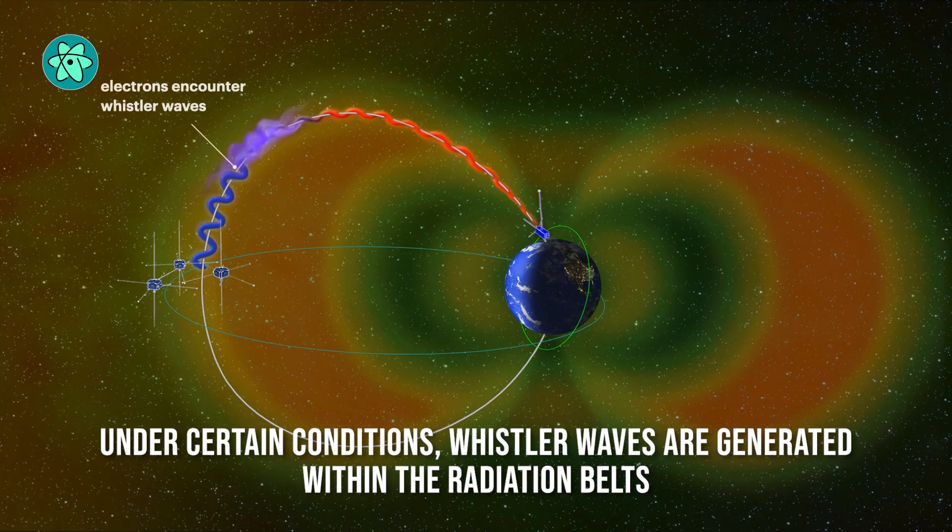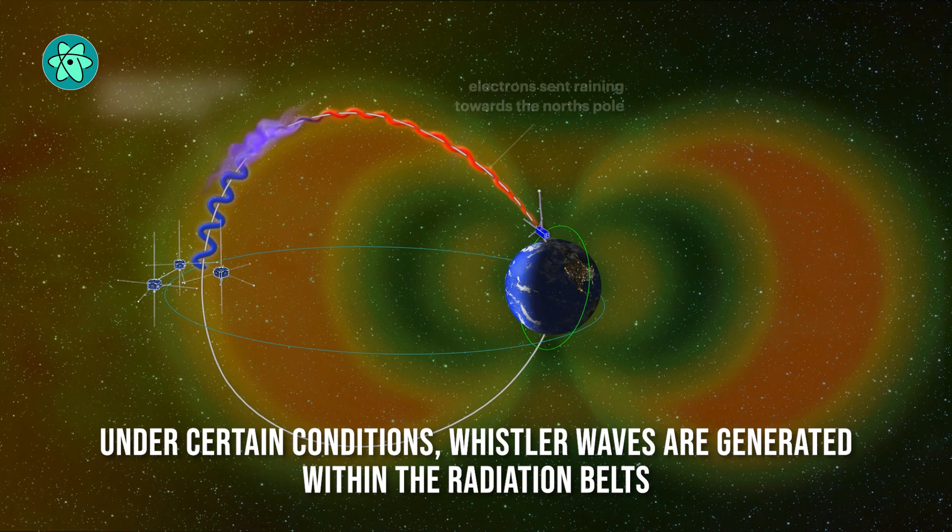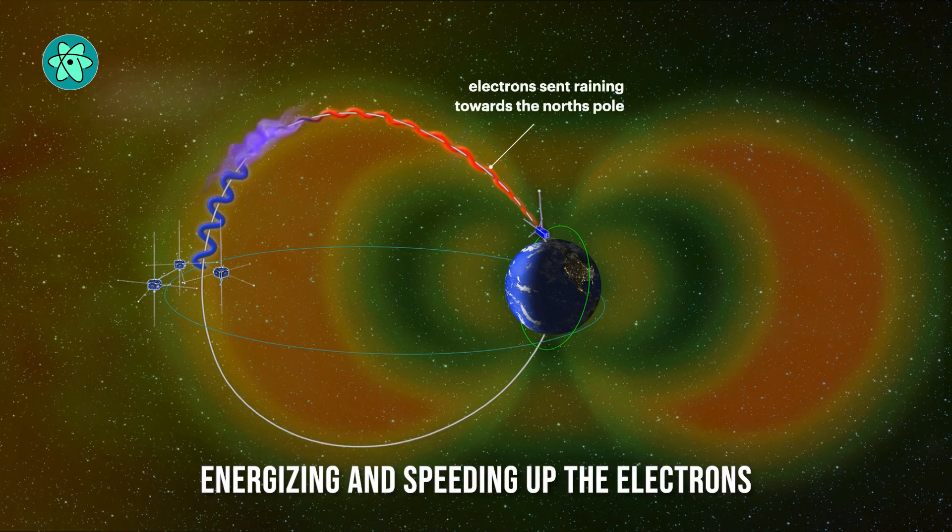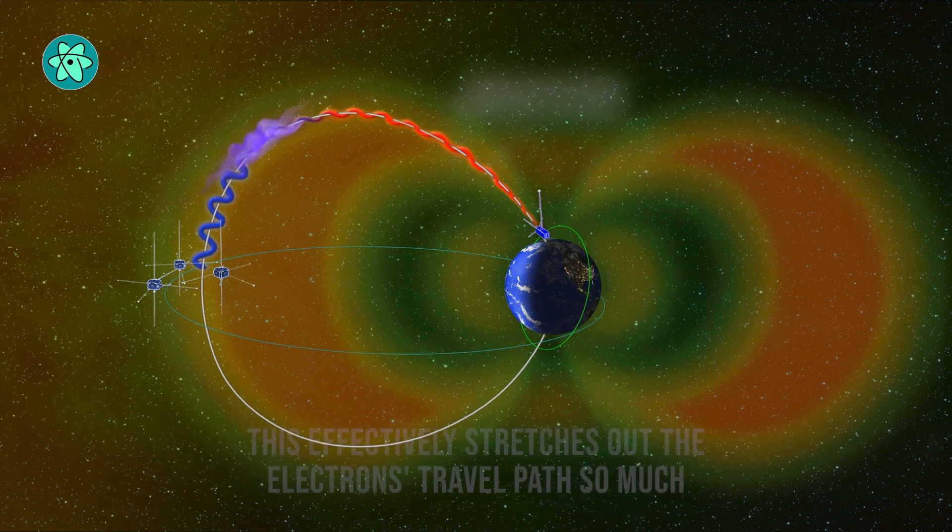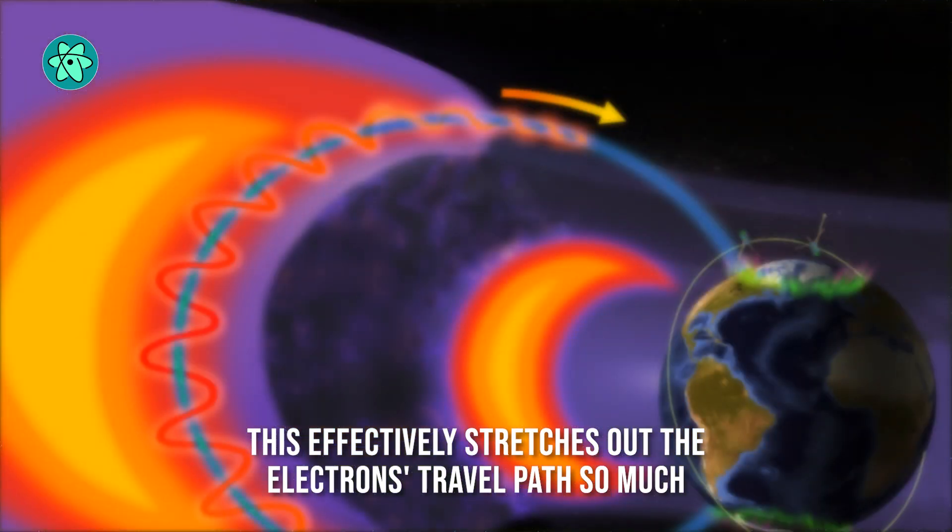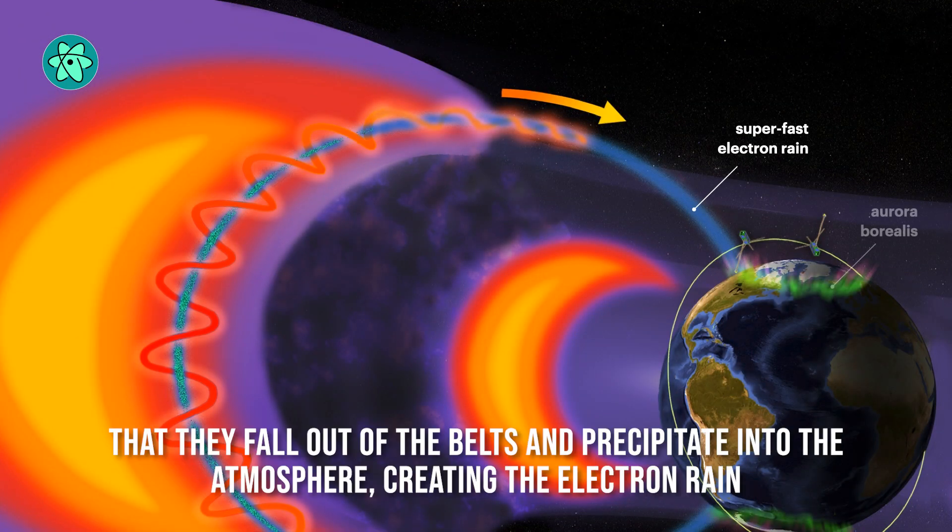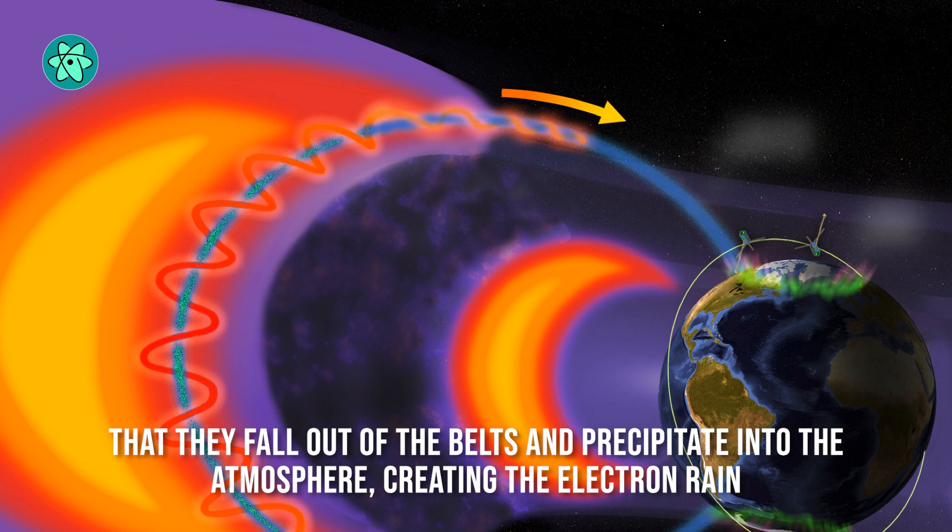Under certain conditions, Whistler waves are generated within the radiation belts, energizing and speeding up the electrons. This effectively stretches out the electrons' travel path so much that they fall out of the belts and precipitate into the atmosphere, creating the electron rain.